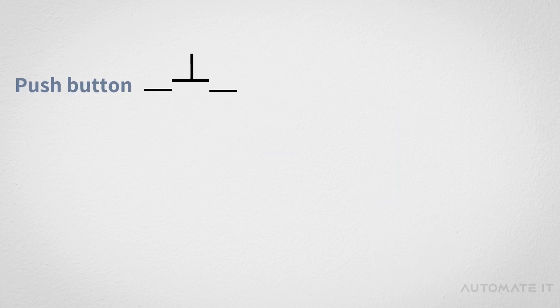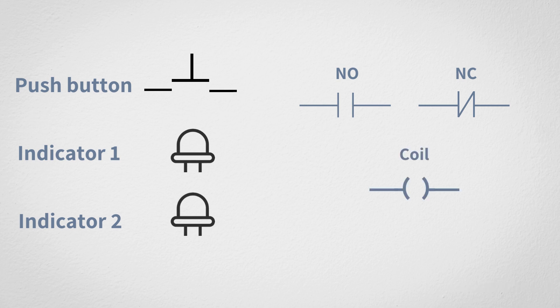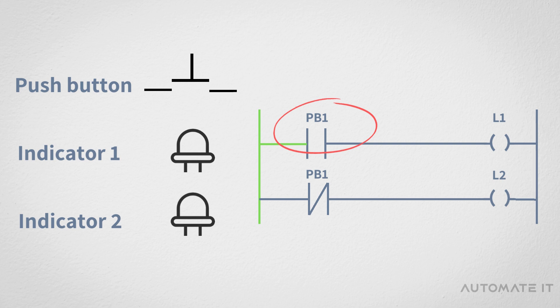To illustrate, suppose that we have a push button as an input and two indicators as outputs. Digital inputs are represented by normally open contact or normally closed contact in the ladder logic program, and outputs are represented by coils. Suppose that the first rung uses the normally open contact of the push button and the second rung uses its normally closed contact.